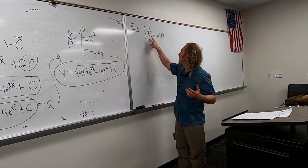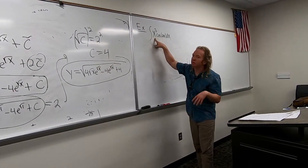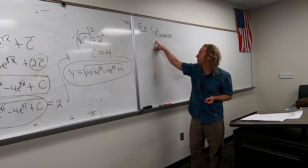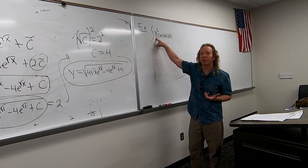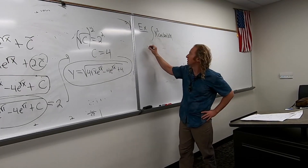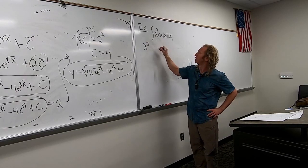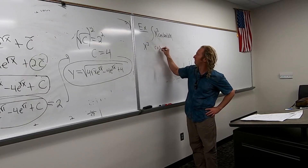One of these factors eventually becomes zero after repeated differentiation — that's this one, right? So you write it down, and that's the one you're going to differentiate, so you write it down.